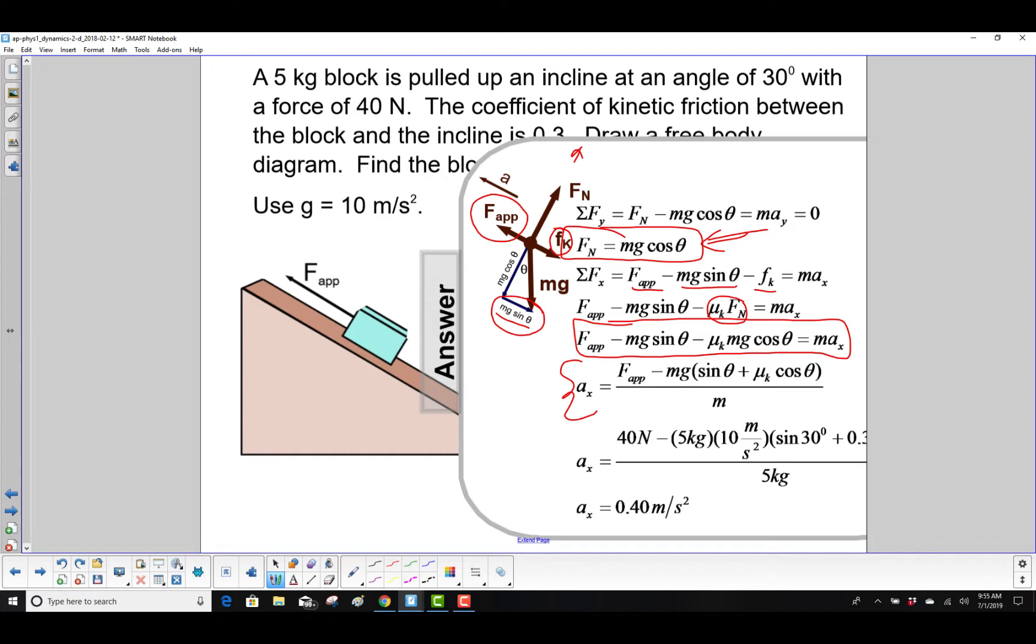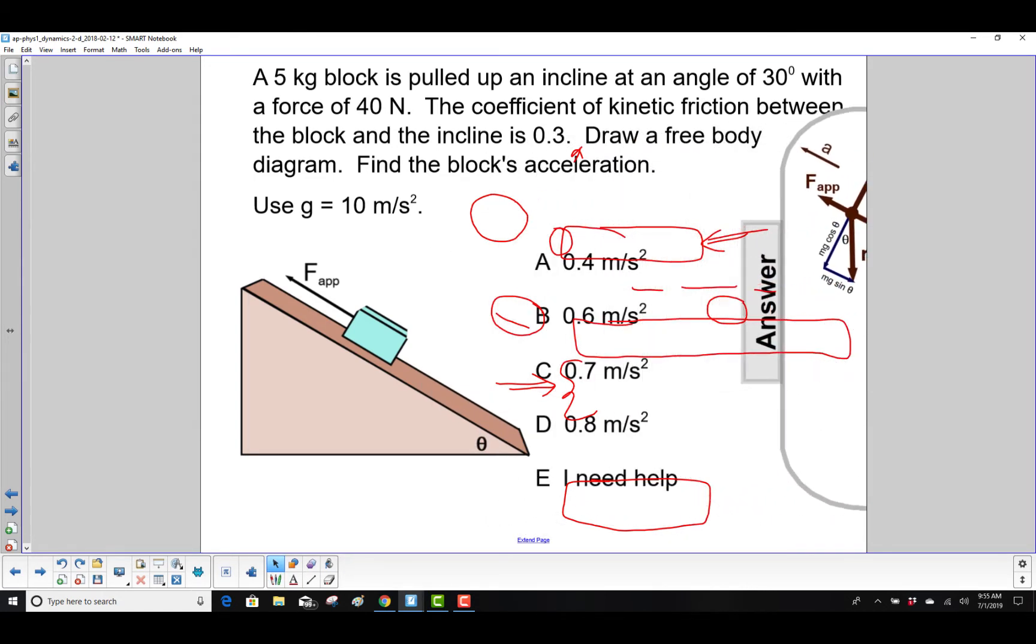And you always want to work out the algebra first. And this way, for example, if you're getting graded on a quiz or an exam, this is most of the work right here. Now all we have to do is plug in the numbers and be as careful as we can with our calculator. And we get 0.40 meters per second squared. And that answer is A.